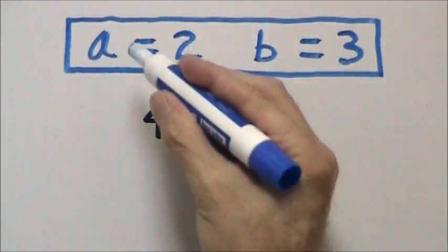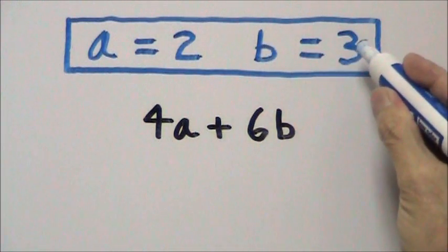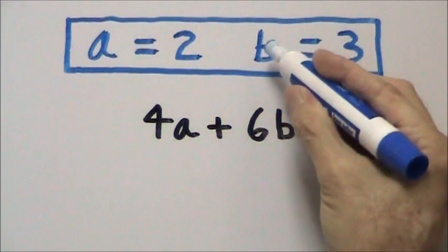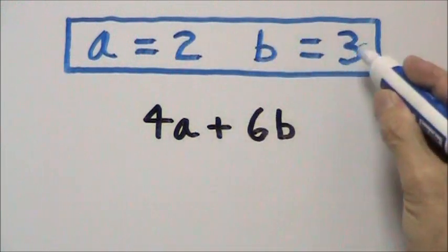In this problem, a equals 2 and b equals 3. So whenever we see these variables, we replace them with the numbers that they represent.